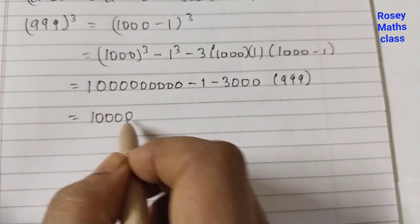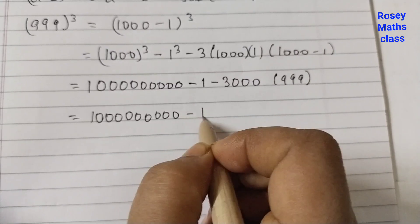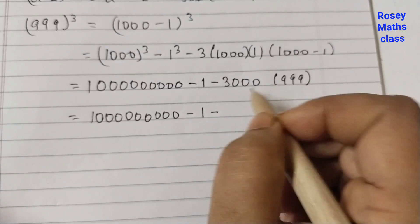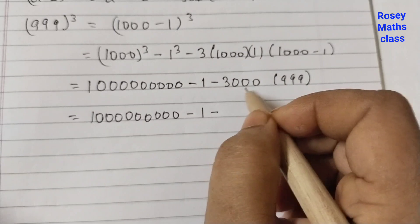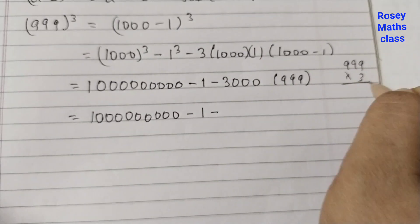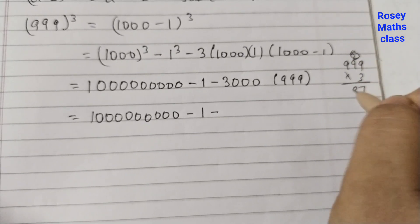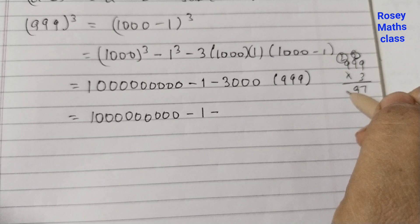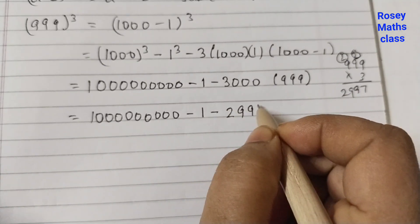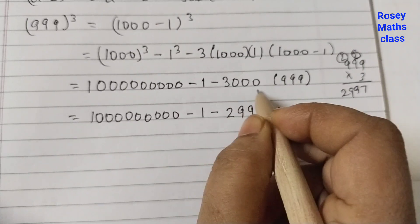So we have 1,000,000,000 minus 1 minus 3000 × 999. For 999 × 3: 9 × 3 = 27, carry 2; 9 × 3 = 27 + 2 = 29, carry 2; 9 × 3 = 27 + 2 = 29. So 999 × 3 = 2997. Therefore 999 × 3000 = 2,997,000 — adding three zeros.